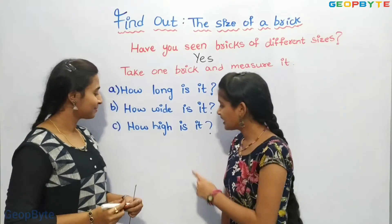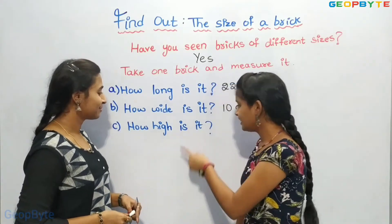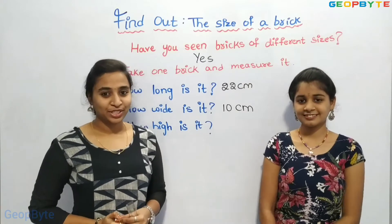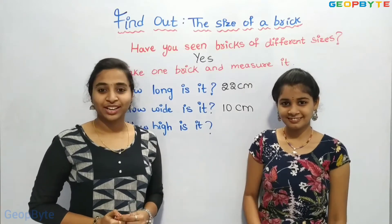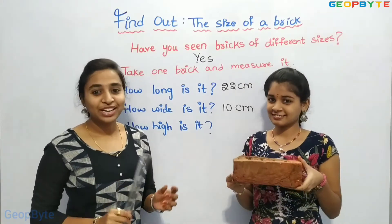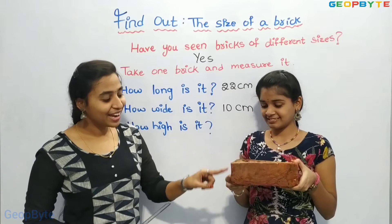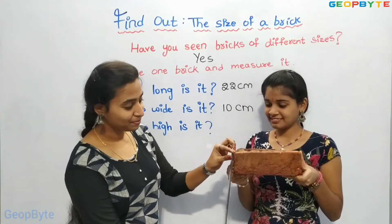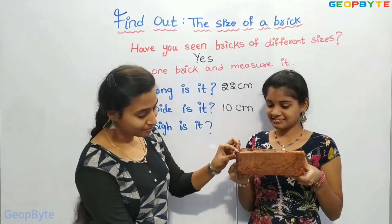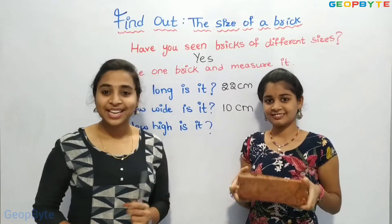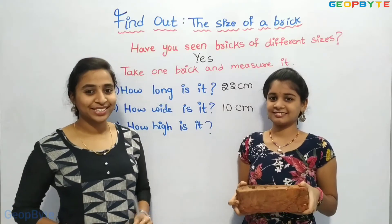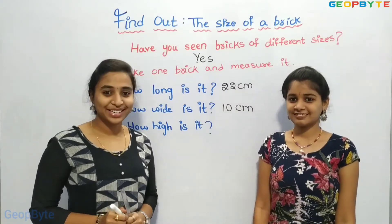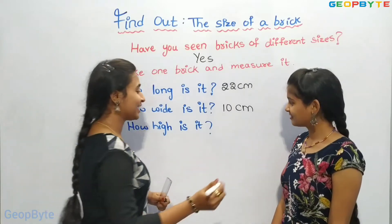How high is it? Let us measure. Children, high means we need to find out the height of the brick. The height of the brick is 7 centimeters. Let us write it down.